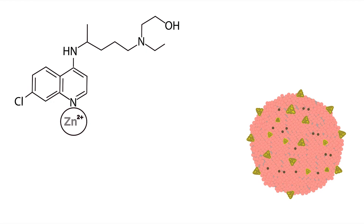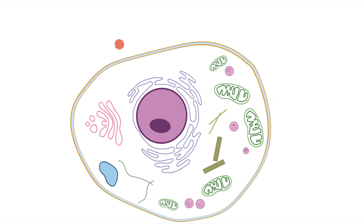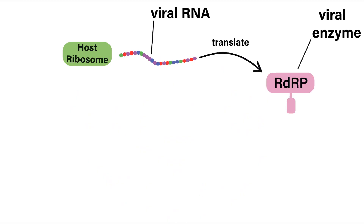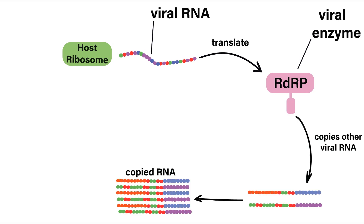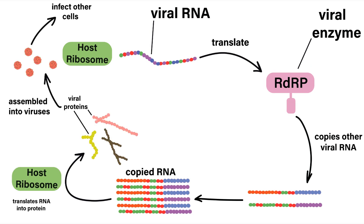With hydroxychloroquine, it's believed the zinc ion inhibits an enzyme specific to the coronavirus' replication. When coronavirus infects a cell, its RNA genome is released into the cell cytoplasm. The host cell ribosome then translates a specific RNA strand into the enzyme RDRP. From here, the RDRP enzyme copies the other coronavirus strands, and the host cell translates these RNA strands into more viral proteins, which are assembled into new viruses that then infect other cells in the body.